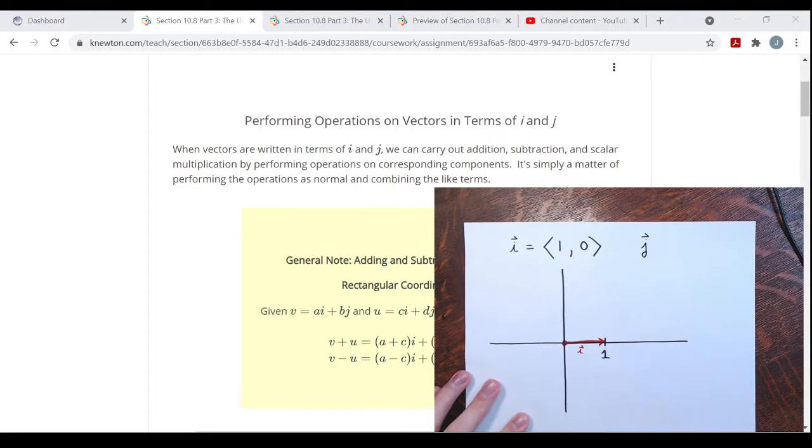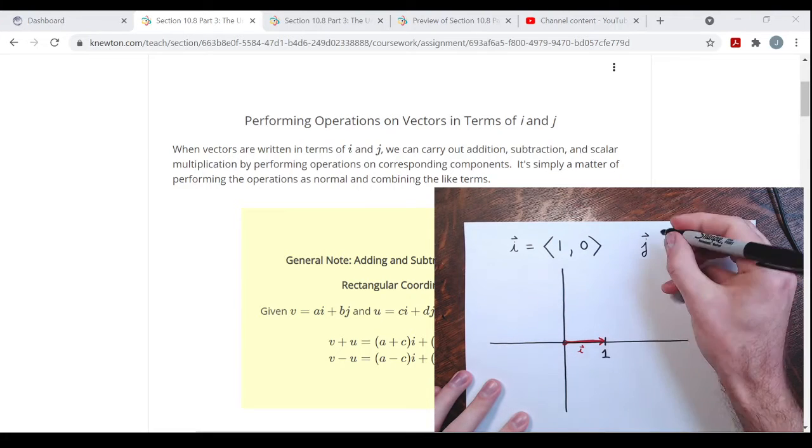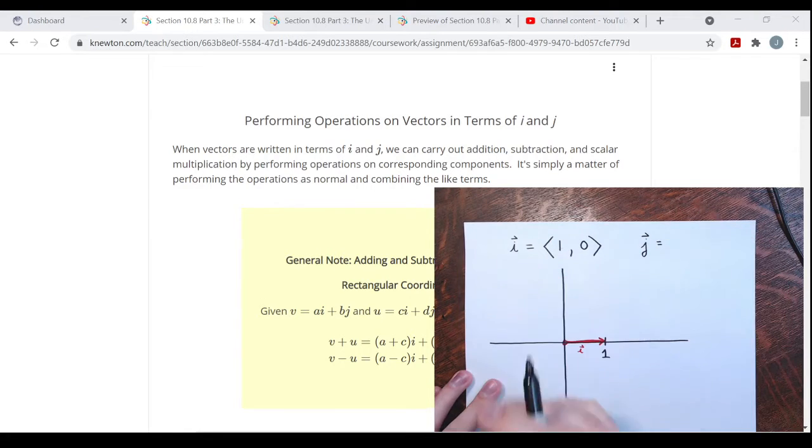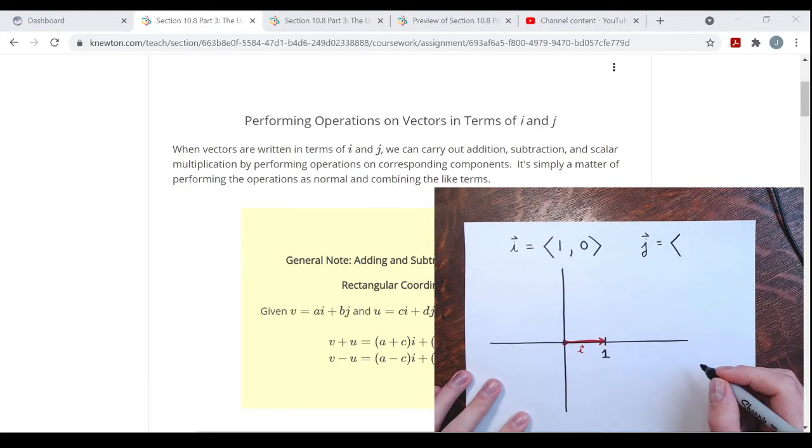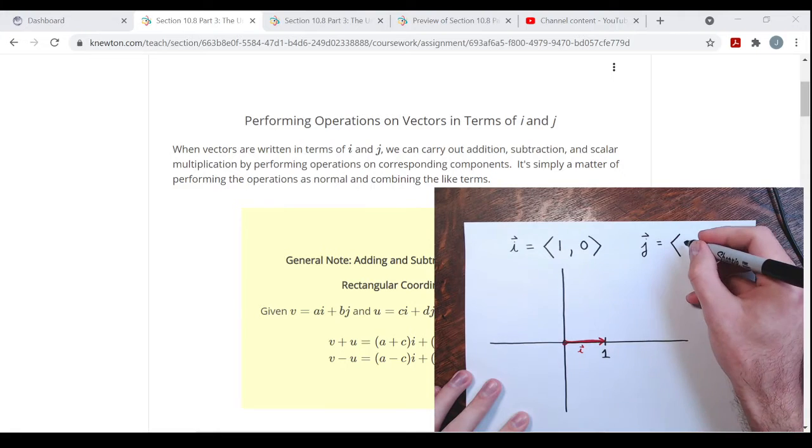And the vector j—i is one unit right, j on the coordinate plane is the vector that travels one unit up. If I were putting that in the standard vector notation with the wedges, it would have components 0 comma 1.